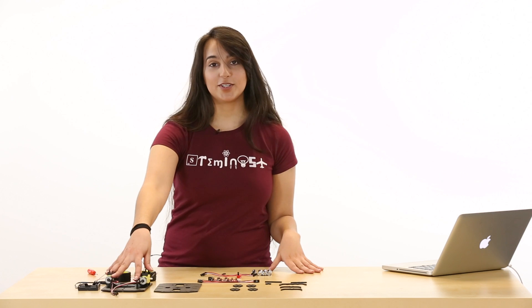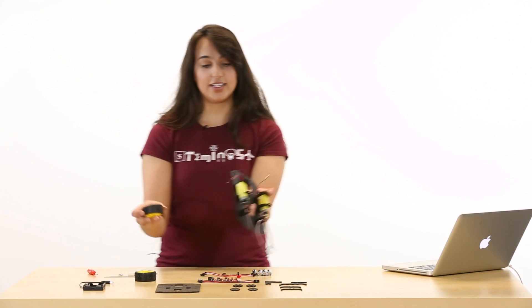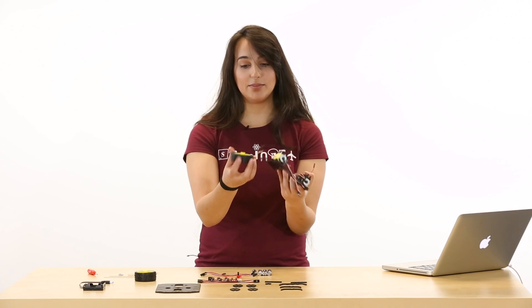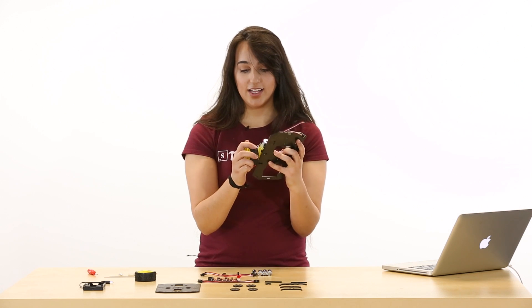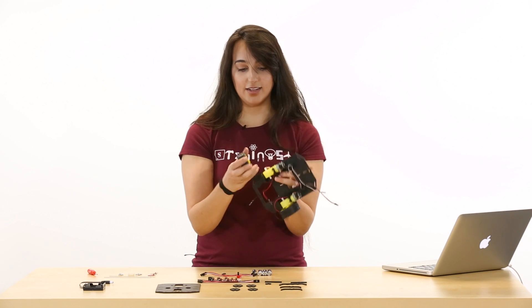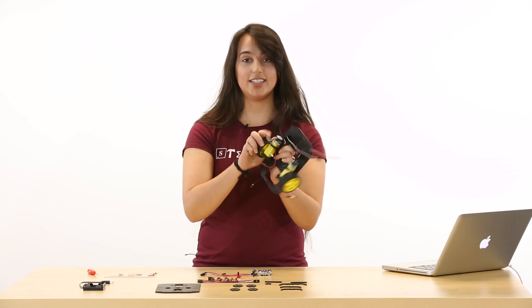Now we have our motors mounted, so now we're just going to put our wheels directly onto the motor. Which is real simple, you just line up the slot and stick it right on.